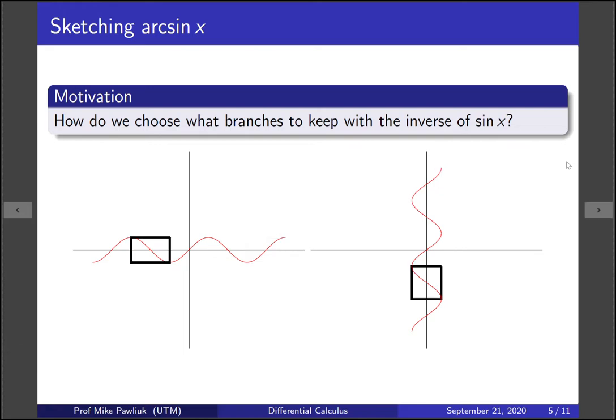Or if we don't want positive ones we could choose this region. And so on. There's many many different choices to choose, but what we settle on is this one.